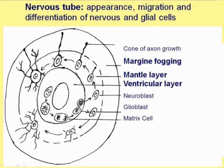When axons start to grow and reach other neurons or target organs, other processes appear and glioblasts convert to all types of glial cells, with the exception of microglia.